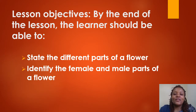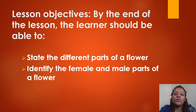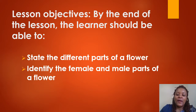Our lesson objectives are: by the end of this lesson you should be able to state the different parts of a flower, and you should also be able to identify the male and the female parts of a flower.